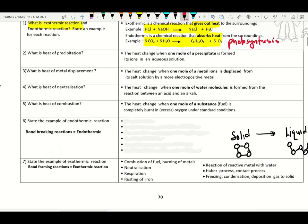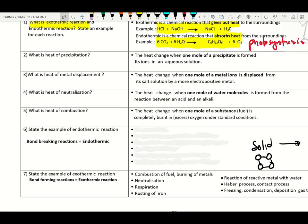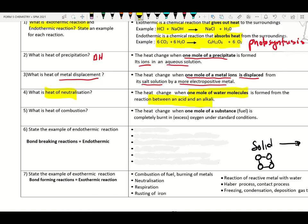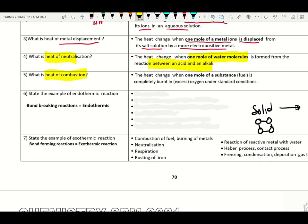Now we move on to the four types of heat of reaction. Number one is heat of precipitation — heat change when one mole of precipitate forms from its ions in aqueous solution. Heat of displacement — heat change when one mole of metal ion is displaced from its salt solution by a more electropositive metal. Heat of neutralization — heat change when one mole of water molecule forms from the reaction between acid and alkali. Heat of combustion — heat change when one mole of substance (fuel) is burned completely in excess oxygen under standard conditions.